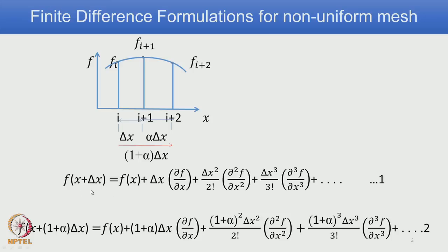The first expression, equation 1, is the already known expansion: f(x + delta x) = f(x) + delta x * df/dx and so on. The new difference is for the second point i+2, which is at a distance of (1 + alpha) delta x from i. So if you write the expansion for the function at i with respect to i+2, you get equation 2: f(x + (1+alpha) delta x), where delta x is replaced by (1+alpha) delta x everywhere — for example, delta x squared is replaced by (1+alpha)^2 * delta x squared, and so on.